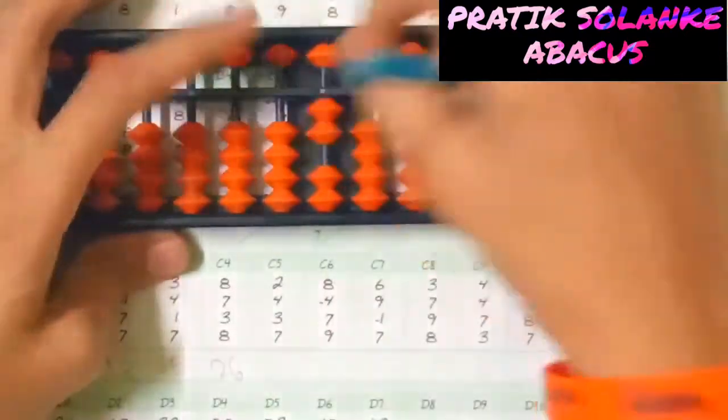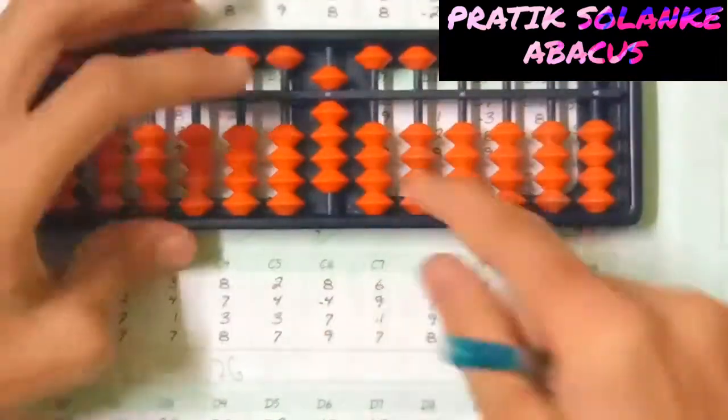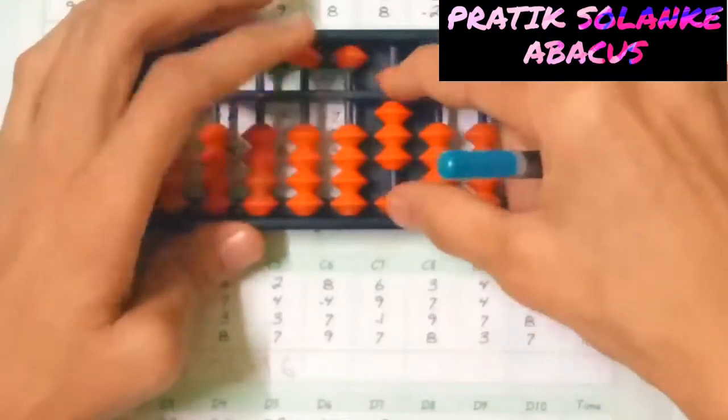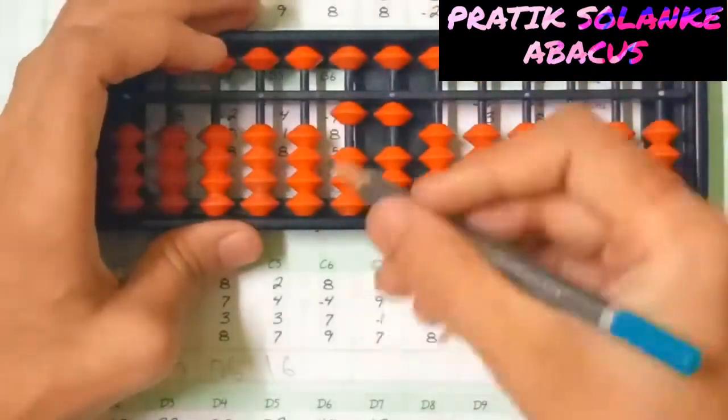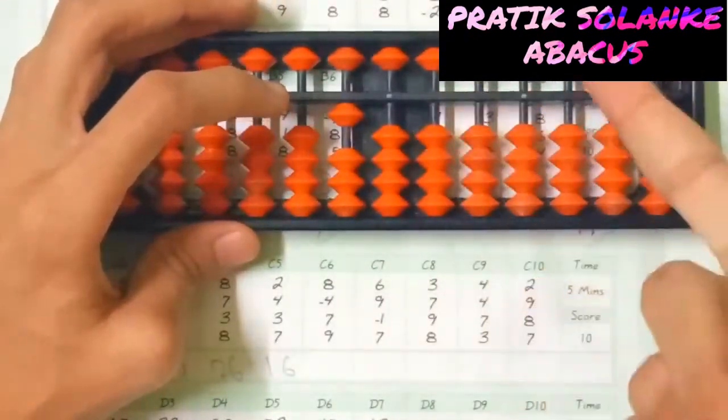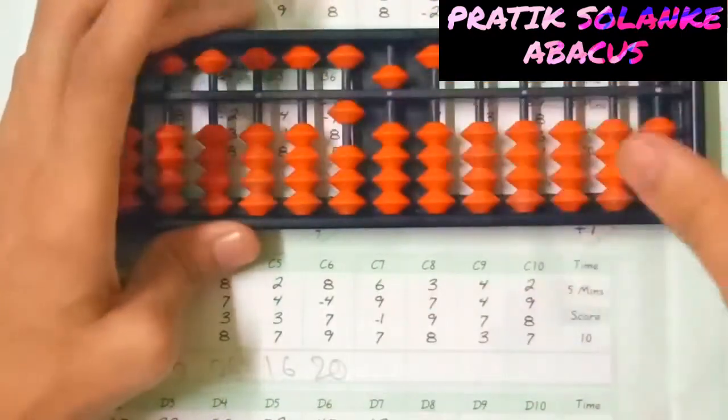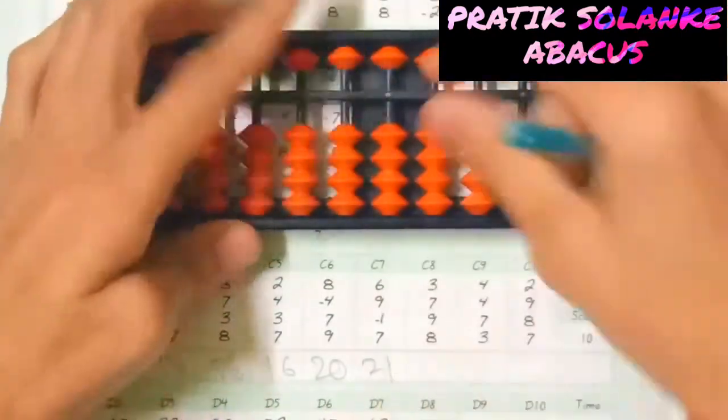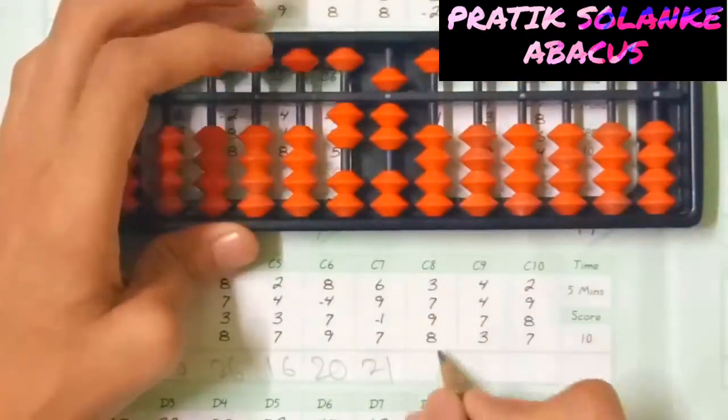26, 2 plus 4, friend 1 is given as smart. 3 plus 7, 7 friend 1. 3 plus 7 plus 9 plus 8, 8 ka friend 2, 2 ko base deenge big boss ko bula leenge 27.